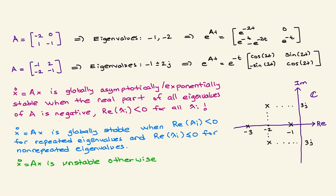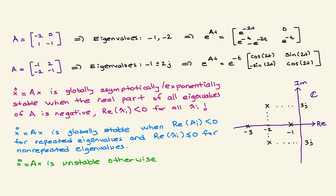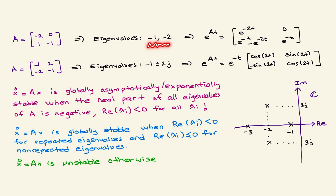Let's look at two examples. For the first case, consider a matrix with eigenvalues minus one and minus two. When you compute e^(At), you'll observe that it is composed of terms whose exponents are directly linked to these real eigenvalues — specifically minus one and minus two — of the system.